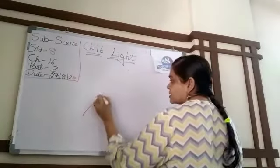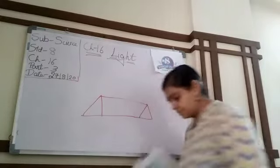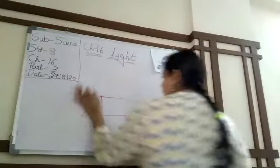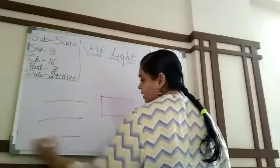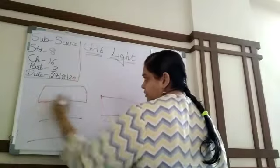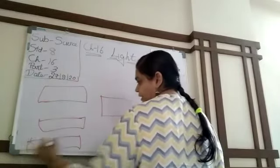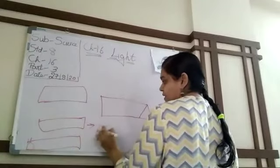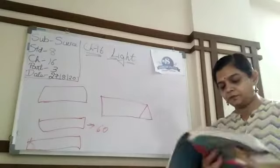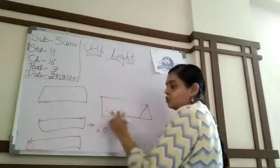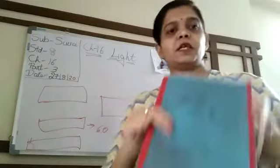We know that kaleidoscope is triangular in shape. These are three parallel rectangle glass sheets. Periscope is at 45 degrees and kaleidoscope is at a 60-degree angle. These three glass sheets make a kind of kaleidoscope.